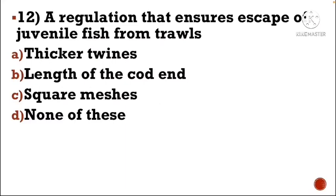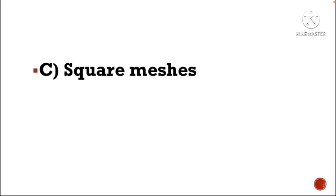Next question: A regulation that ensures escape of juvenile fish from trawls — Option A: ticket mesh, Option B: length of the cord, Option C: square mesh, Option D: none of these. The correct answer is Option C, square mesh.